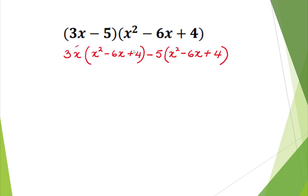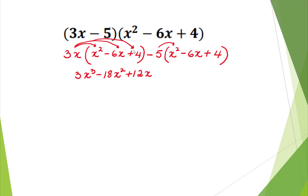Now we're going to use distribution again. 3x times x squared is 3x cubed. 3x times negative 6x is negative 18x squared — we add the exponents. And 3x multiplied by 4 is positive 12x.